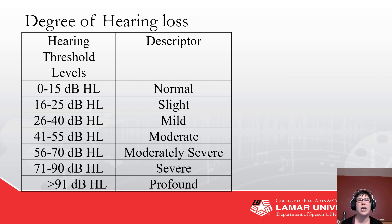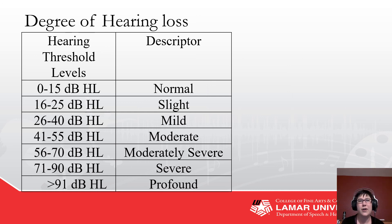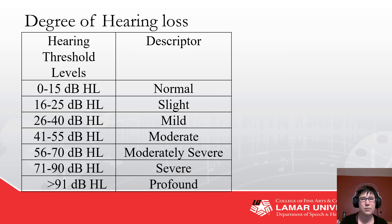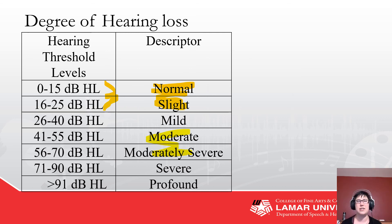Let's talk about degrees of hearing loss and how we describe them. There is some disagreement — you're going to get tired of hearing me say that. My preferred scale has nicely defined categories. Some people would say slight and normal are all in the same category for adults — that slight is only for children — and others would combine moderately severe and severe. There's some variability in conventions.